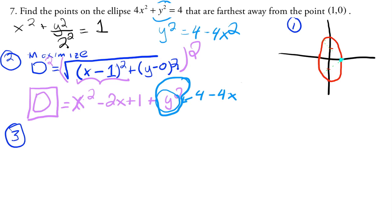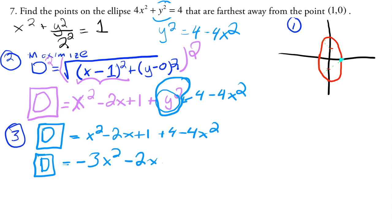So this whole y² is going to be replaced by 4 - 4x². So then what we have is the distance squared is equal to x² - 2x + 1 + 4 - 4x². And so the distance squared is equal to, if we combine, we get -3x² - 2x + 5.